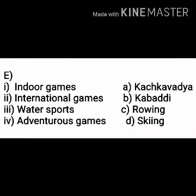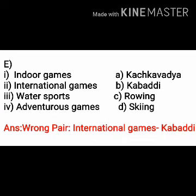Now read the last identify the wrong pair: indoor games — Kachak Wadia; international games — Kabaddi; water sports — rowing; adventurous games — skiing. Among these four, the second one is wrong — international games — Kabaddi. Kabaddi is the national game of India and is not yet internationally recognized, though nowadays Indian people are promoting Kabaddi to be played all over the world. Write down the wrong pair: international games dash Kabaddi.